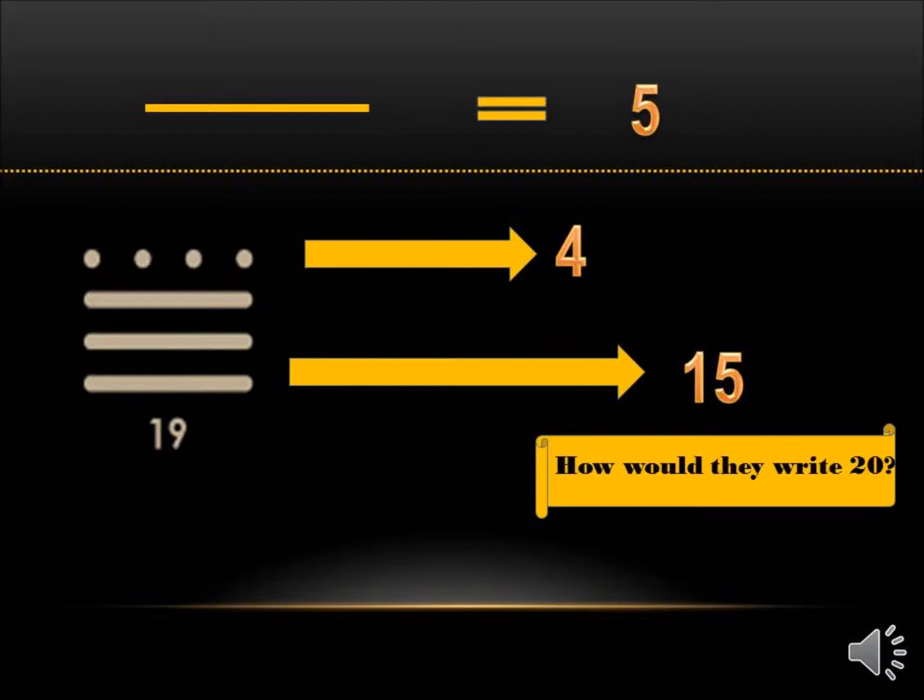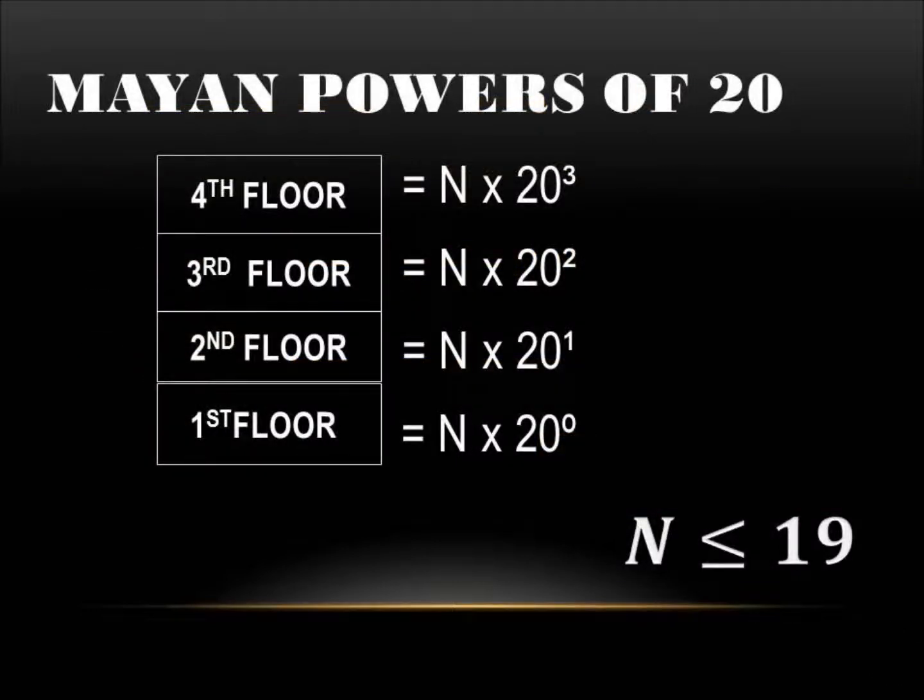So how would you write 20? Since the Mayans are using a base 20 system, then the floors starting at the bottom would be 1, then 20, 400, and 8,000 for the 4th floor. However, since the numeric system was developed primarily for the calendar, some changes were made so that the numbers were a better approximation of 365 days in a calendar year. The 3rd floor went from 400 to 360, and the 4th floor went from 8,000 to 7,200.